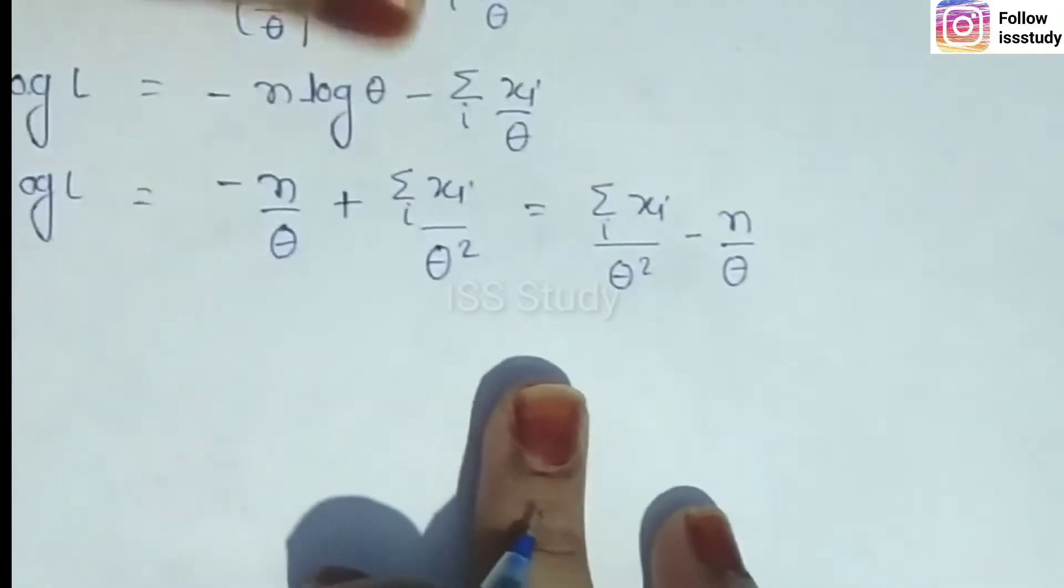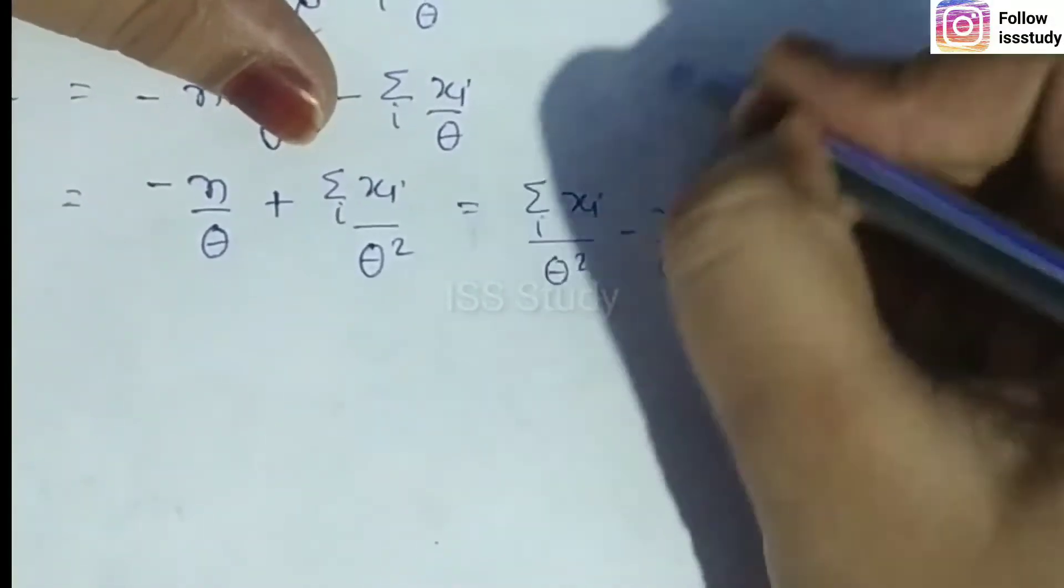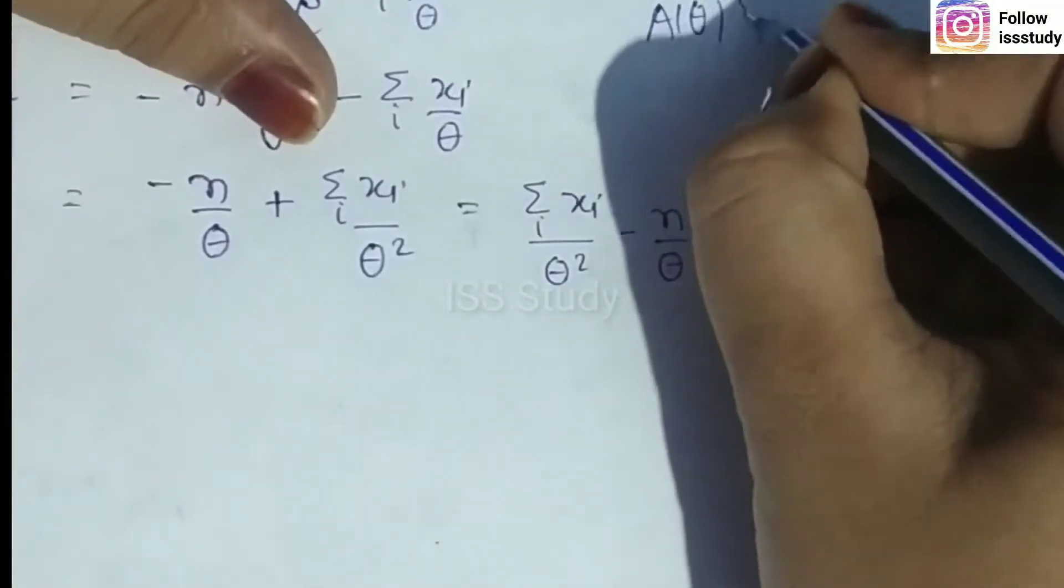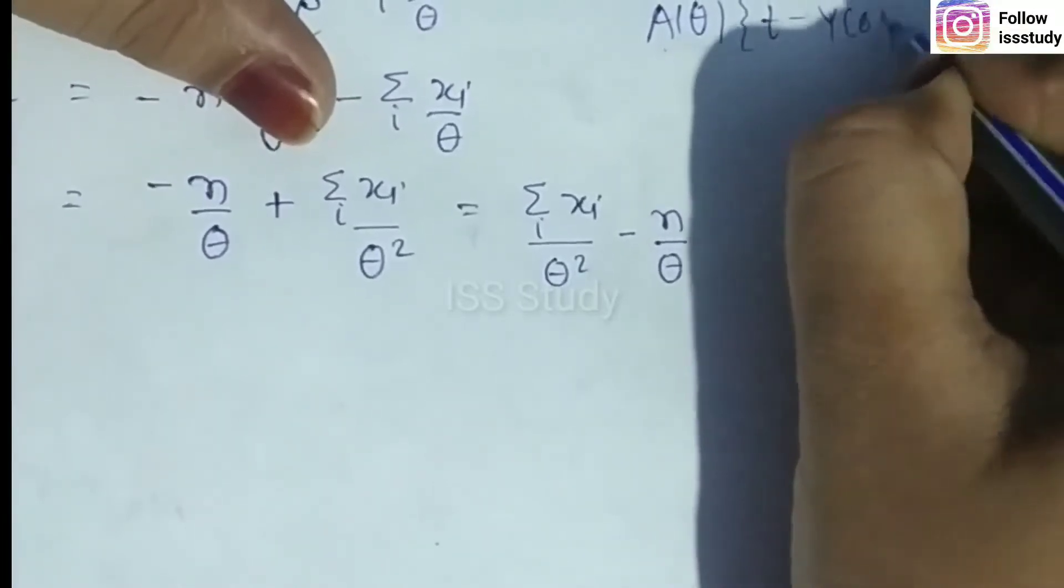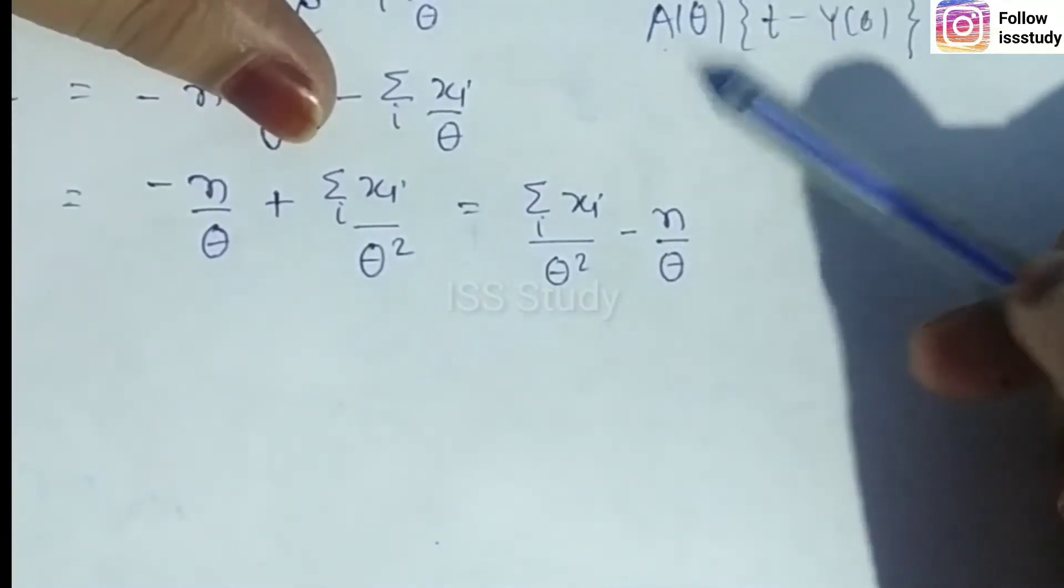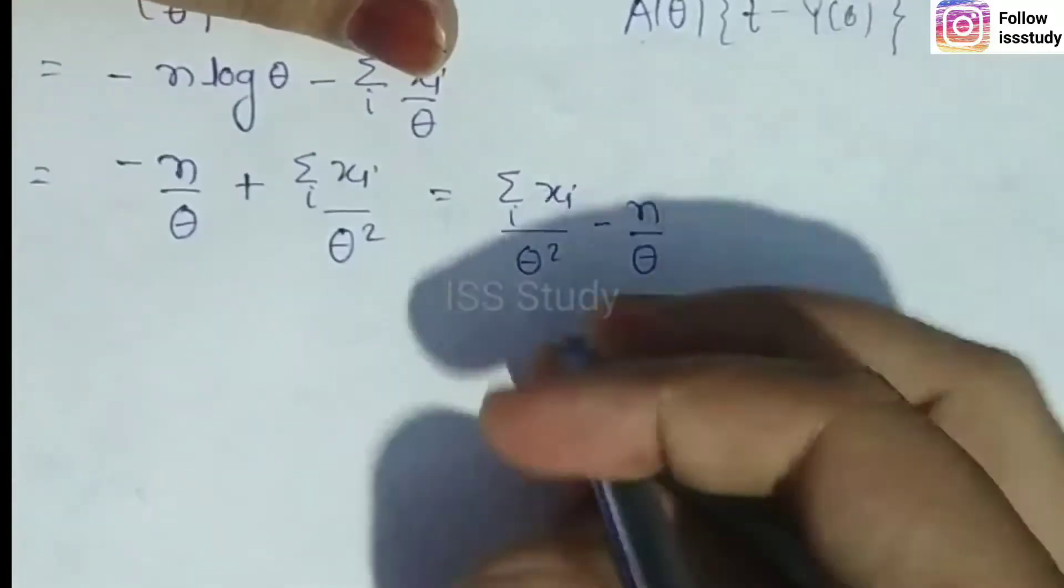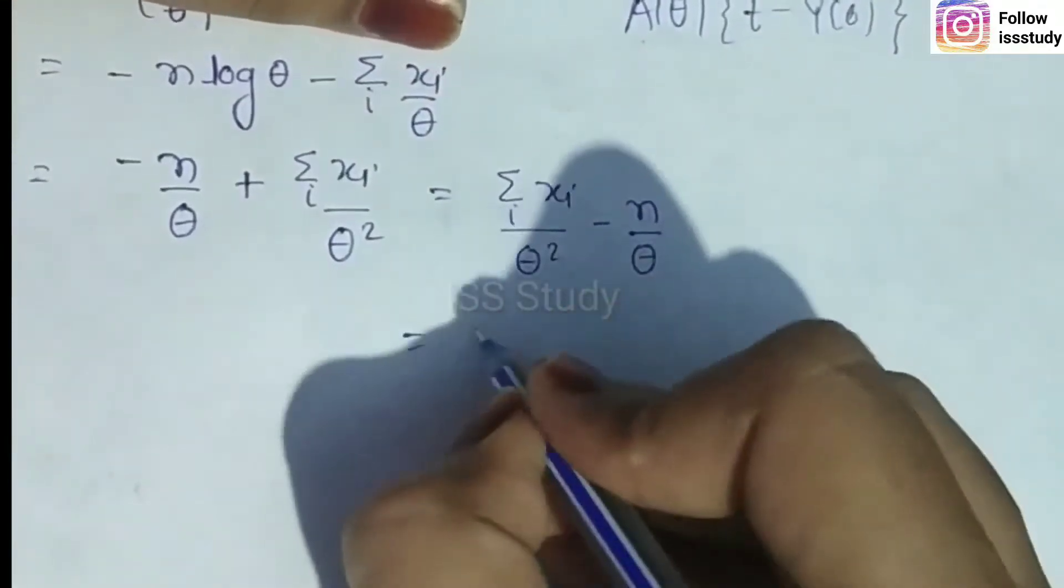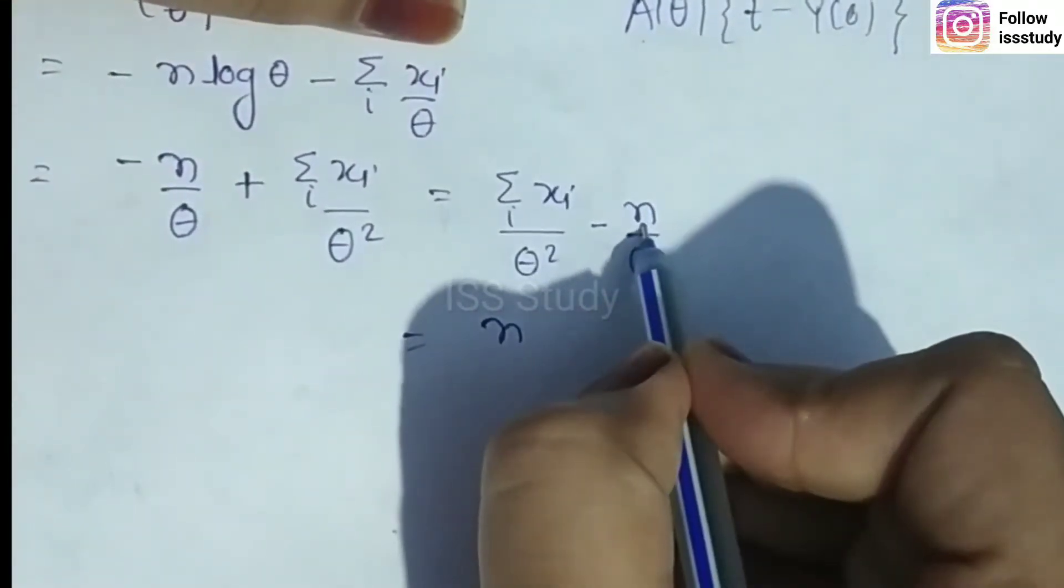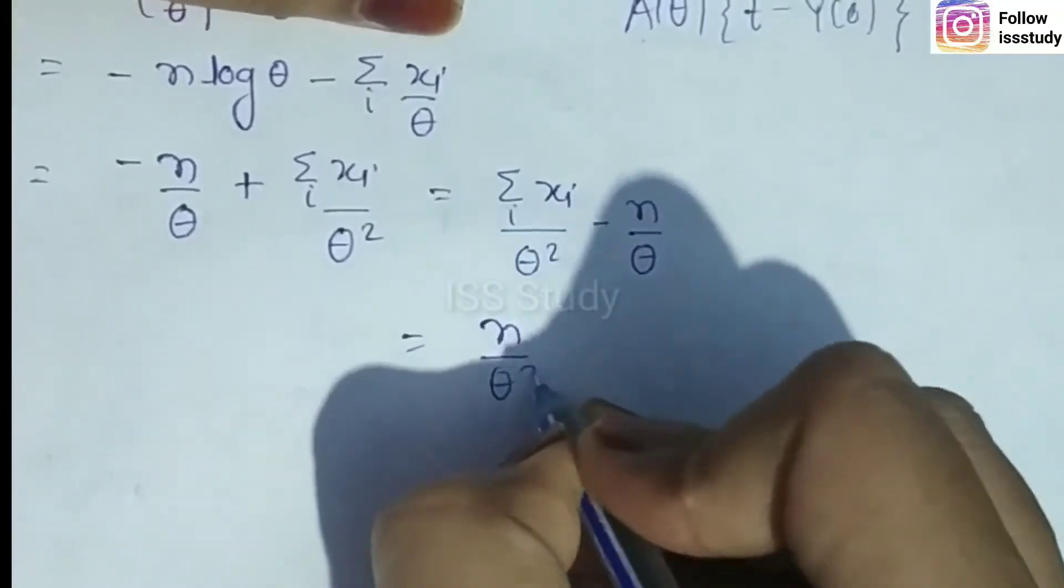Now we need to compare this to the form A(θ)[T - γ(θ)], where A(θ) is a function of theta and γ(θ) is also a function of theta. We can take 1/θ² common and remove n from numerator and denominator.